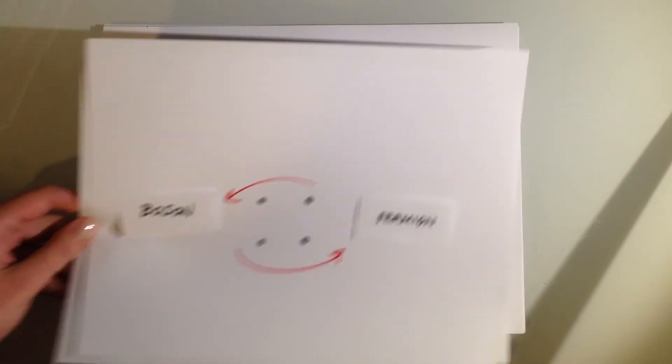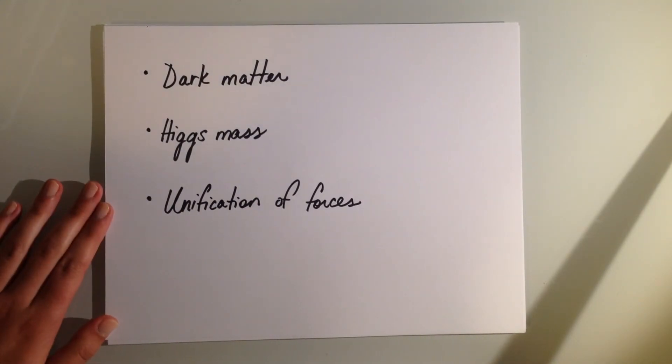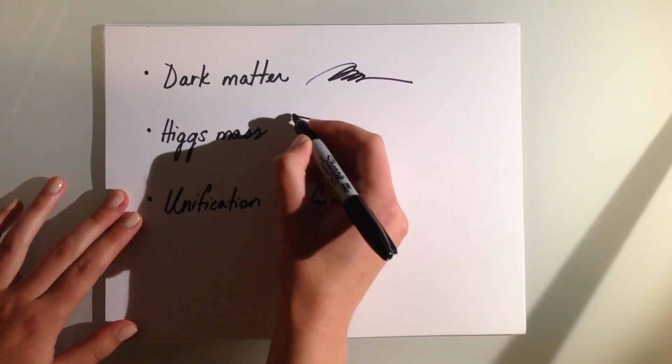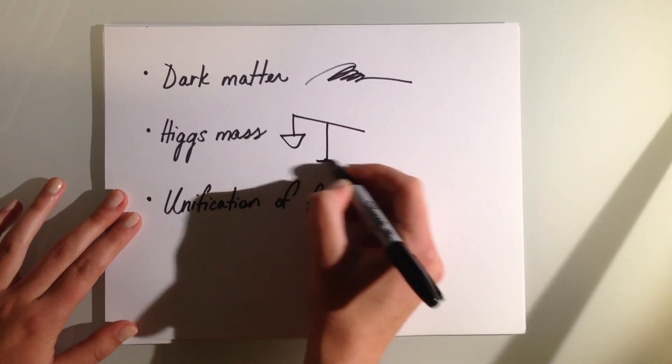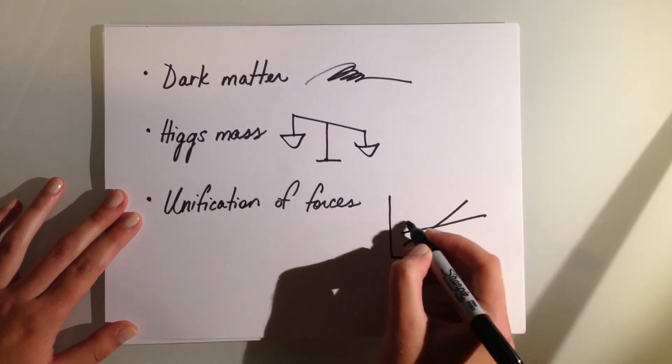The reason this is an idea that physicists like is because it helps to answer a lot of questions we still have about the universe, including what dark matter might be, why the Higgs boson, the particle that gives stuff mass, is so light, and how the different forces could have all been bundled together in the early universe.